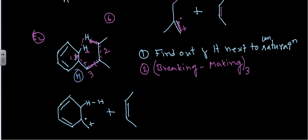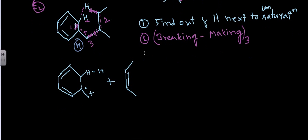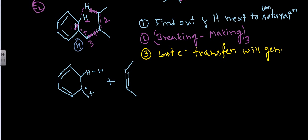In all cases we have three sets of the breaking-and-making process. Breaking the bond, making the bond — first set; breaking the bond, making the bond — second set; breaking the bond, making the bond — third set. And the last important thing: after completion of all three sets, the last electron transfer will generate a radical and a +1 charge instead of a double bond. That's how McLafferty rearrangement works. I hope that's helpful, thank you.